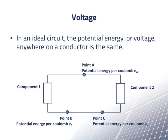We use V as a symbol for volts. In an ideal circuit, the potential energy, or voltage, anywhere on a specific conductor is the same. This is another law of the theory of circuits. Voltage is measured between two points, such as between points A and B. As points B and C are on the same conductor, the voltage between them is zero.